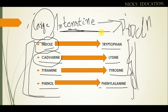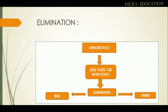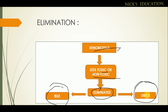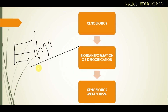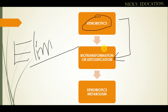When we consume chemically preserved food or a drug, these toxic chemicals should be eliminated out of the body. Whether a xenobiotic is less toxic or non-toxic, it should still be eliminated out of the body. Elimination can occur in the form of feces or urine.